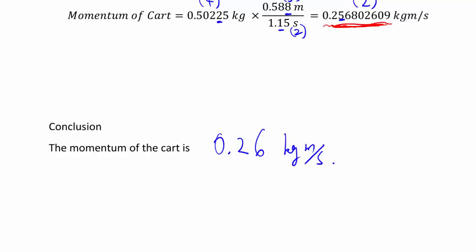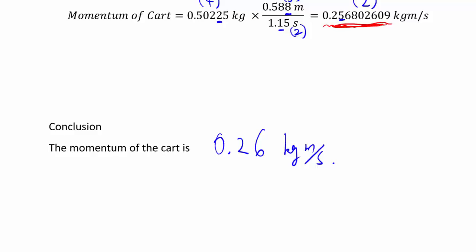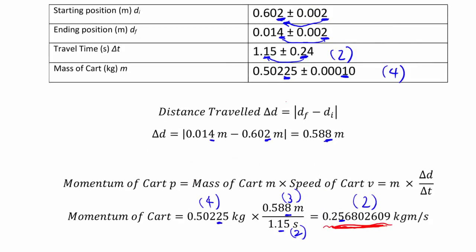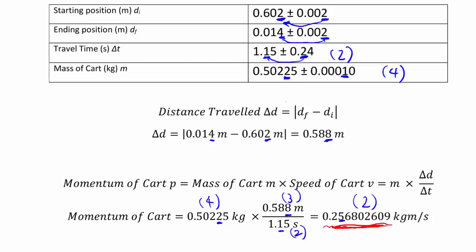So quick recap: the sig figs in your final answer will depend on everything you use to calculate that particular answer, and eventually trace back to your raw data. The number of sig figs in your raw data will ultimately be decided by the uncertainty, wherever it starts. So again, we would really like to encourage you to use these underlines to track your sig figs all the way through. That way you're not all confused and trying to work it all out at once at the very end.